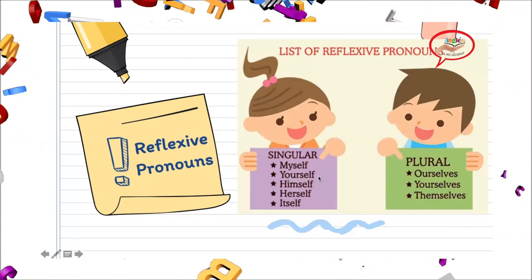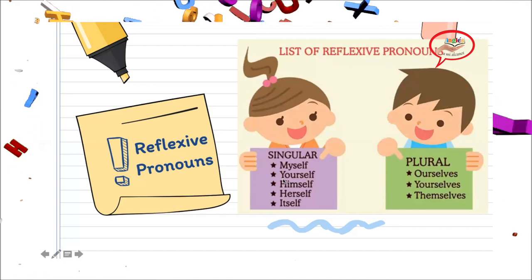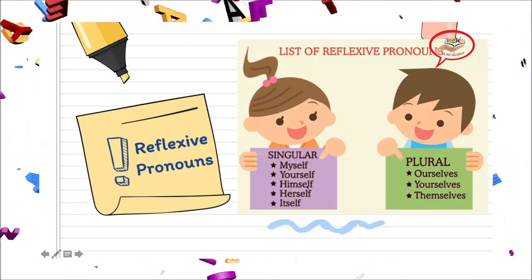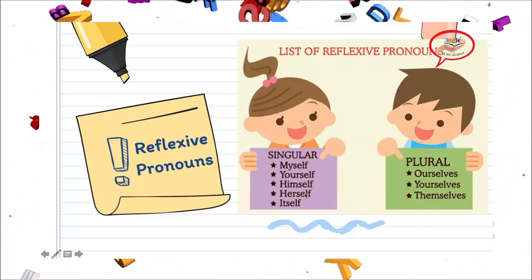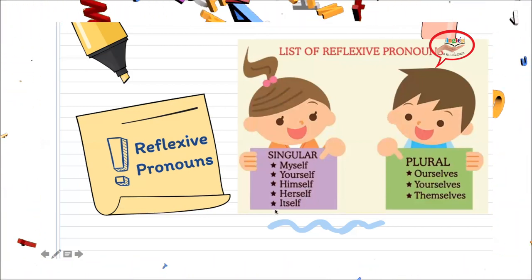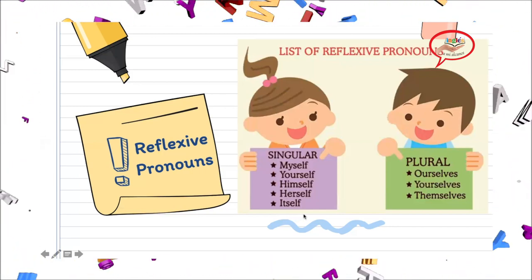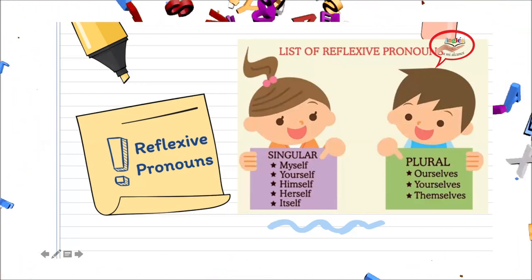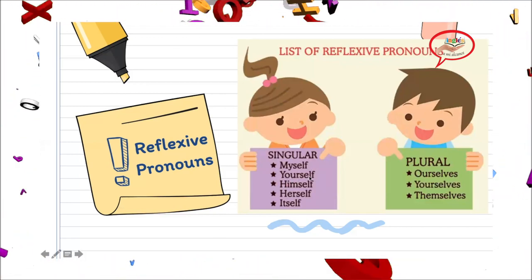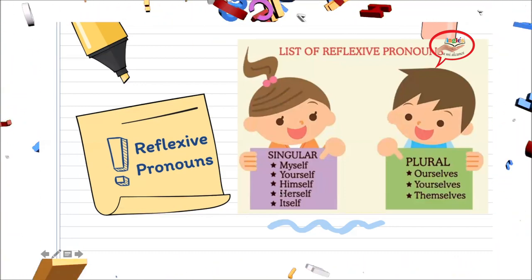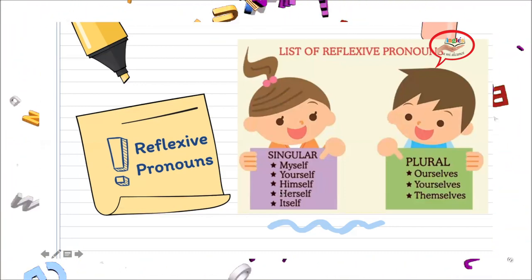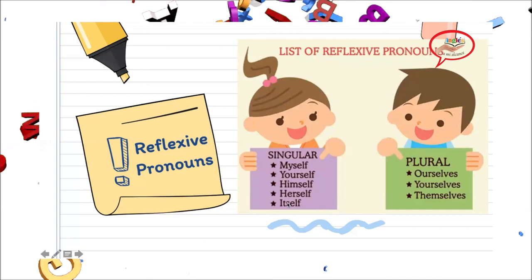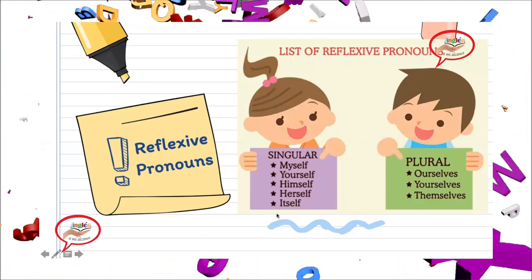Vamos a repetir los singulares: Myself. Yourself. Himself. Herself. Itself. Recordando: myself se refiere a cuando yo estoy hablando de mi persona. Yourself cuando queremos referirnos a you. Himself cuando queremos referirnos a he. Herself cuando nos queremos referir a she. Itself cuando nos queremos referir a it.